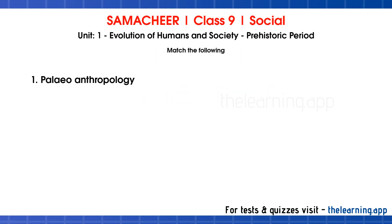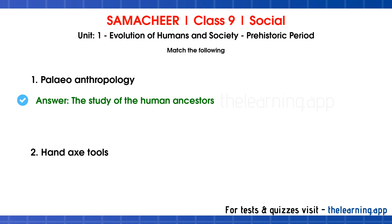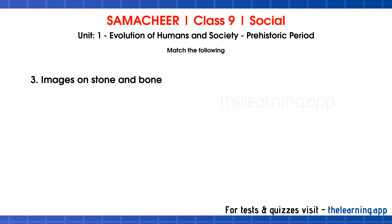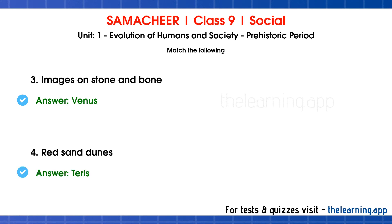Match the following. First: Paleoanthropology — correct answer is the study of human ancestors. Second: hand axe tools — correct answer is Acheulian. Acheulian refers to hand axe tools. Third: images on stone and bone — correct answer is Venus figurine. Fourth: red sand dunes — correct answer is Terries.